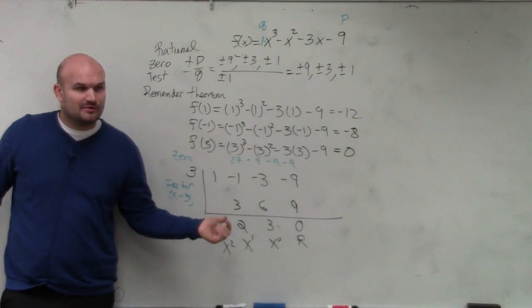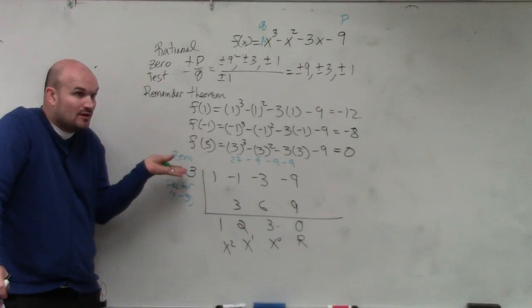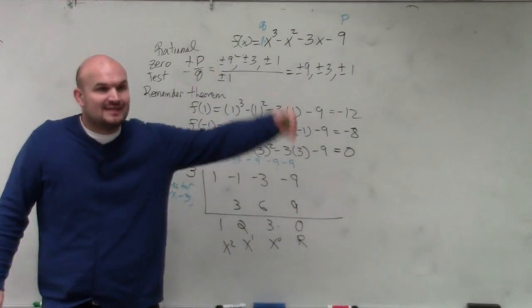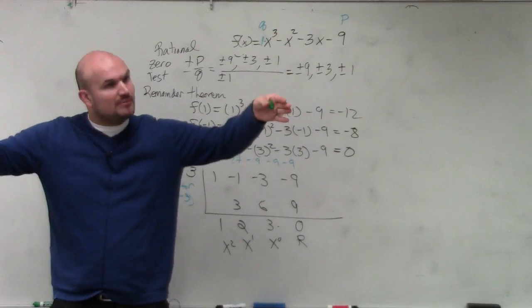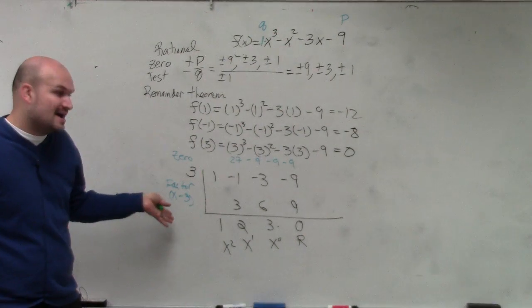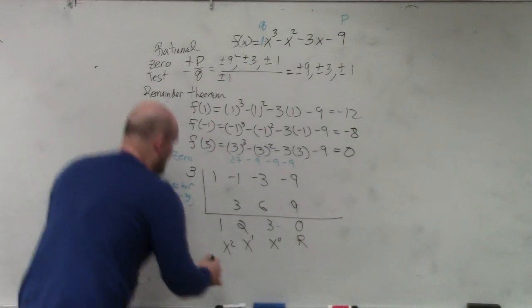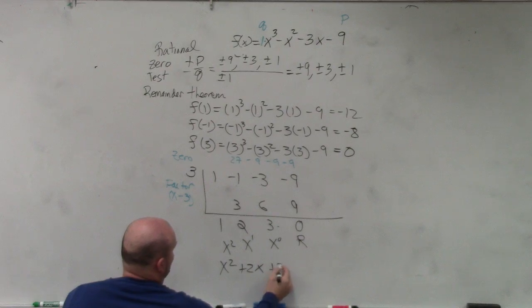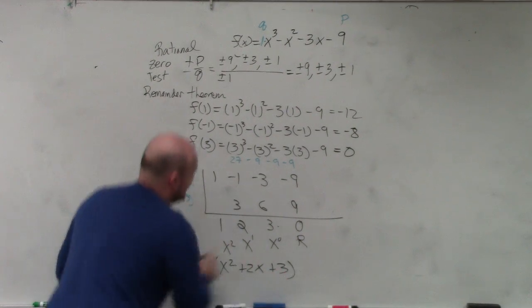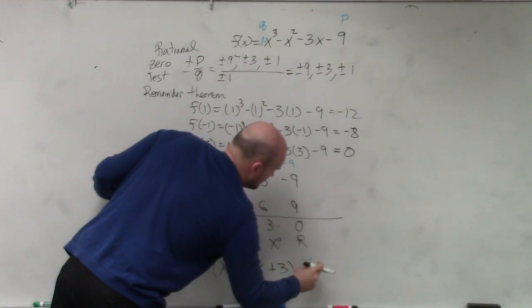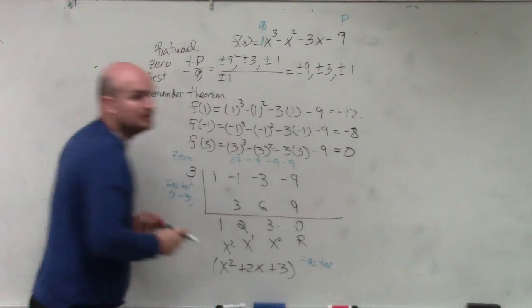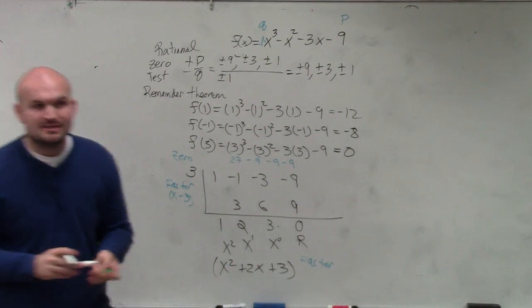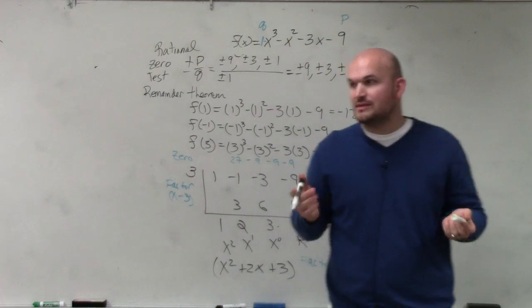x minus 3, right? We're going to go over that next problem. If you know what the zero is, remember you've set it equal to x, set it equal to 0, and then you can multiply it. So it's x minus 3 is the factor. So therefore, I now have x squared plus 2x plus 3. That is another factor. If you have questions, let me know.